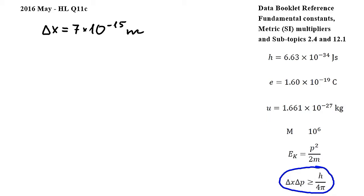I will use the equal sign in this equation. Expressing delta p, we get h over 4 pi delta x. Delta x, the uncertainty in the position, in this question is equal to the nuclear radius.